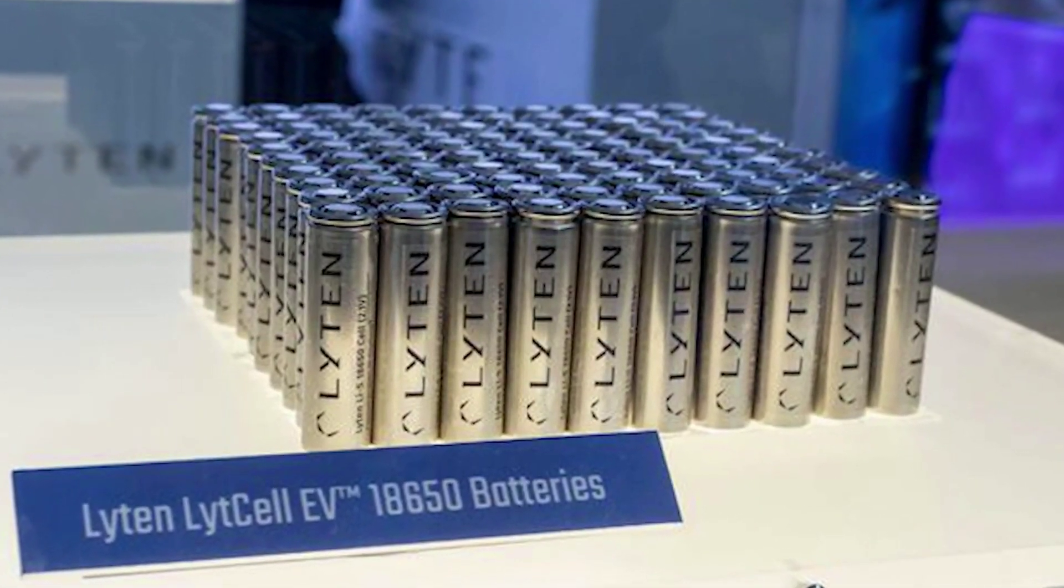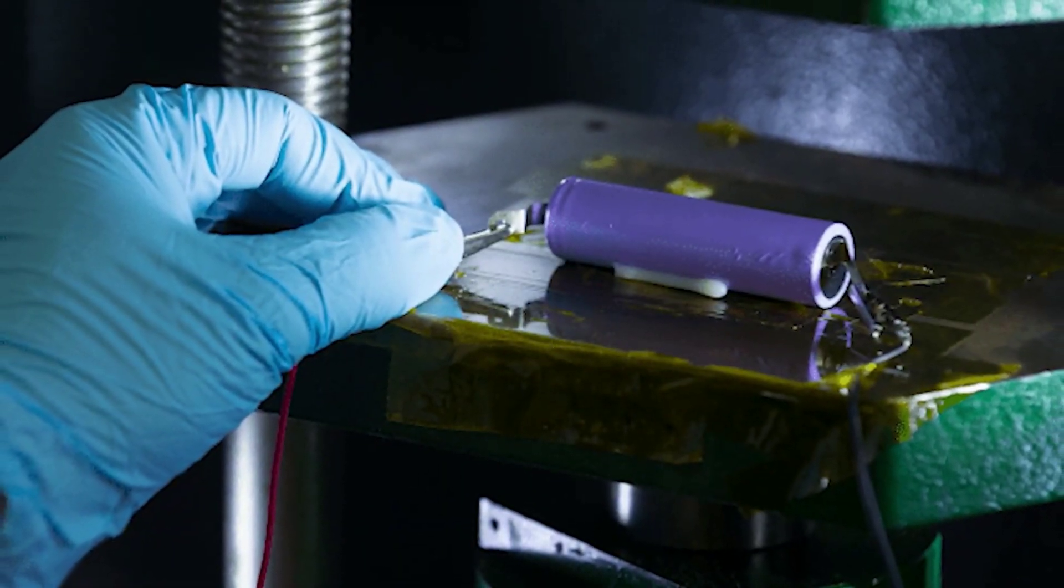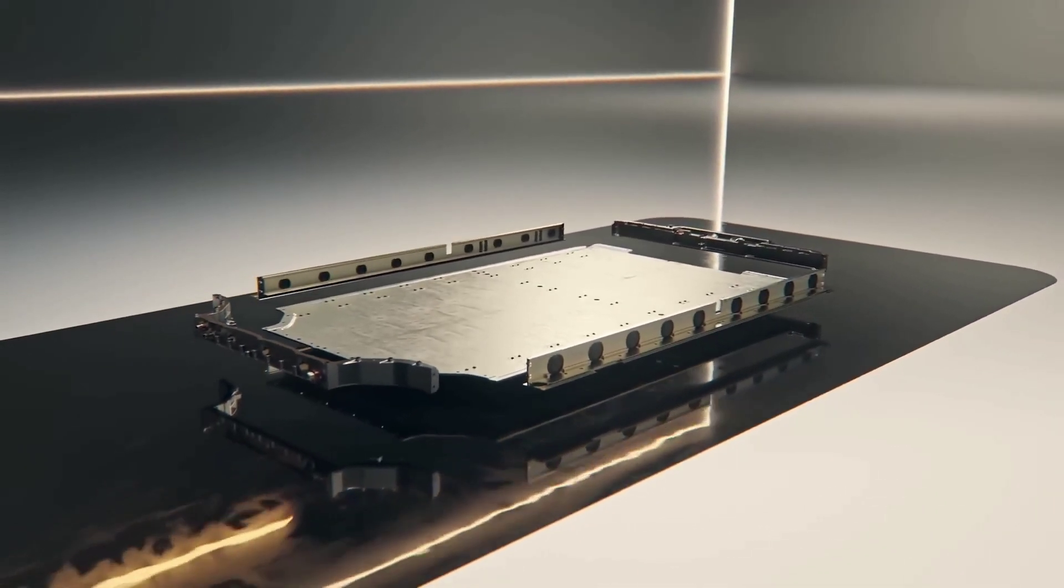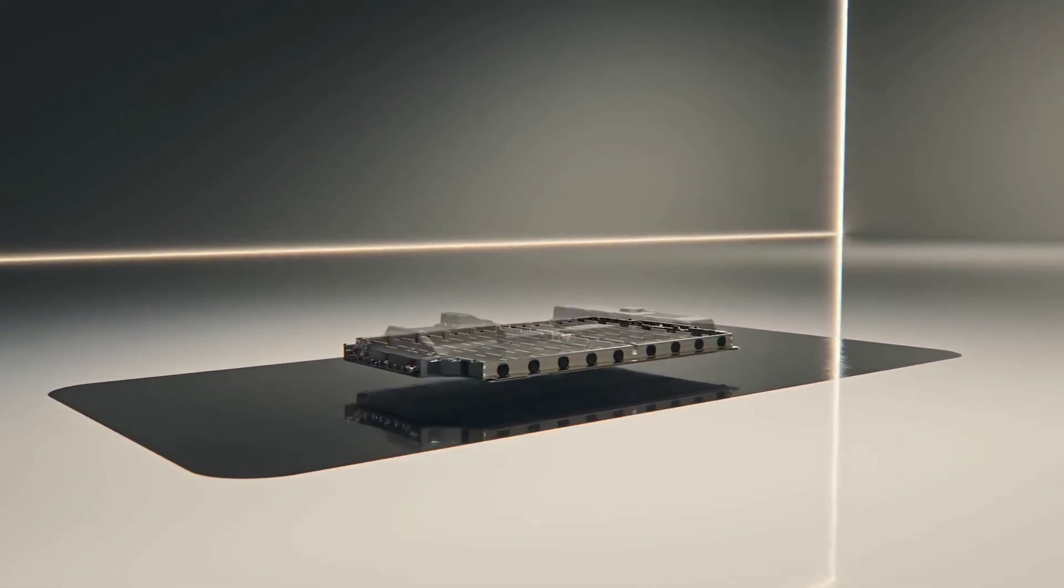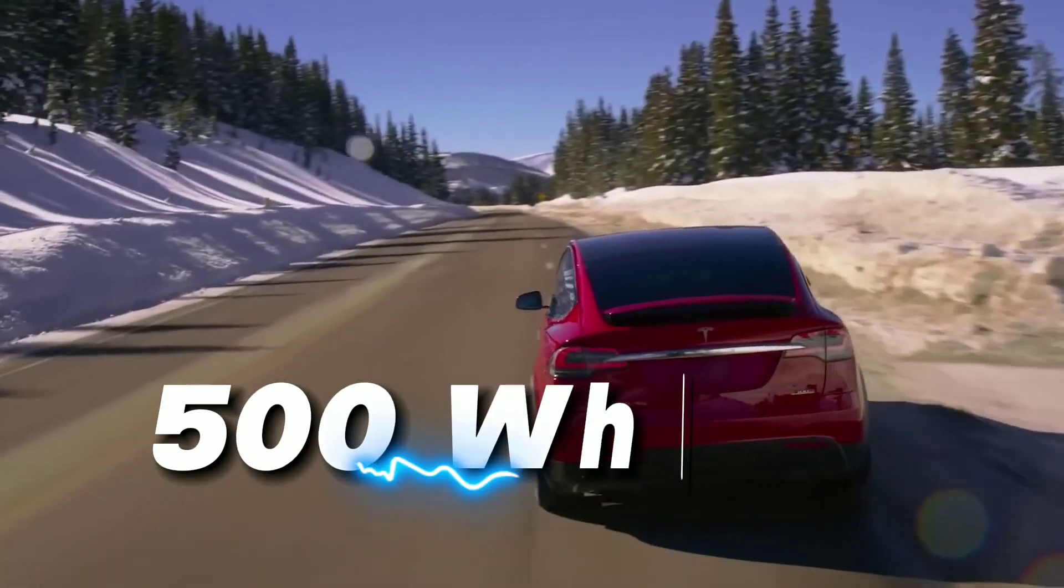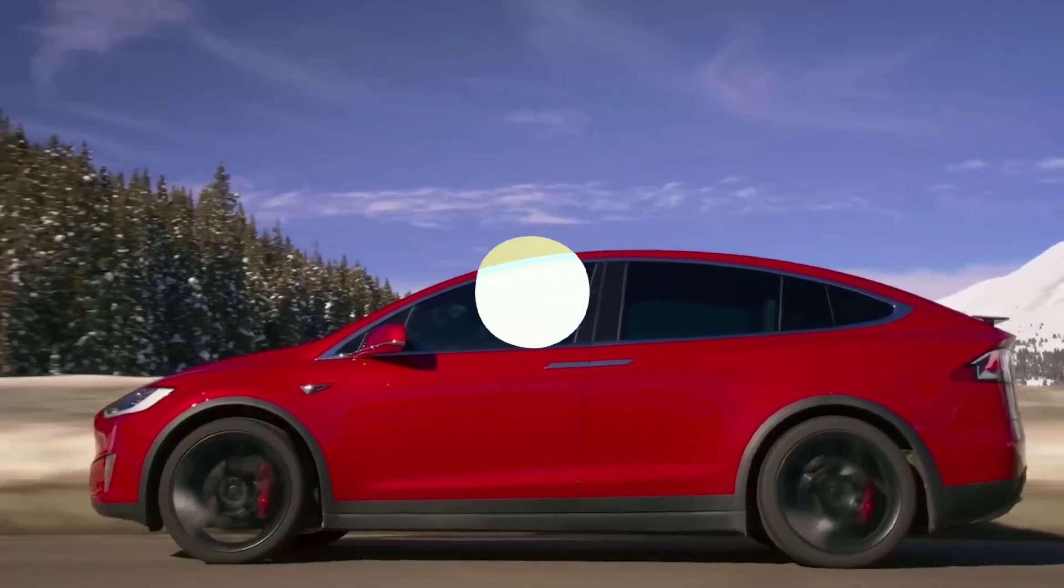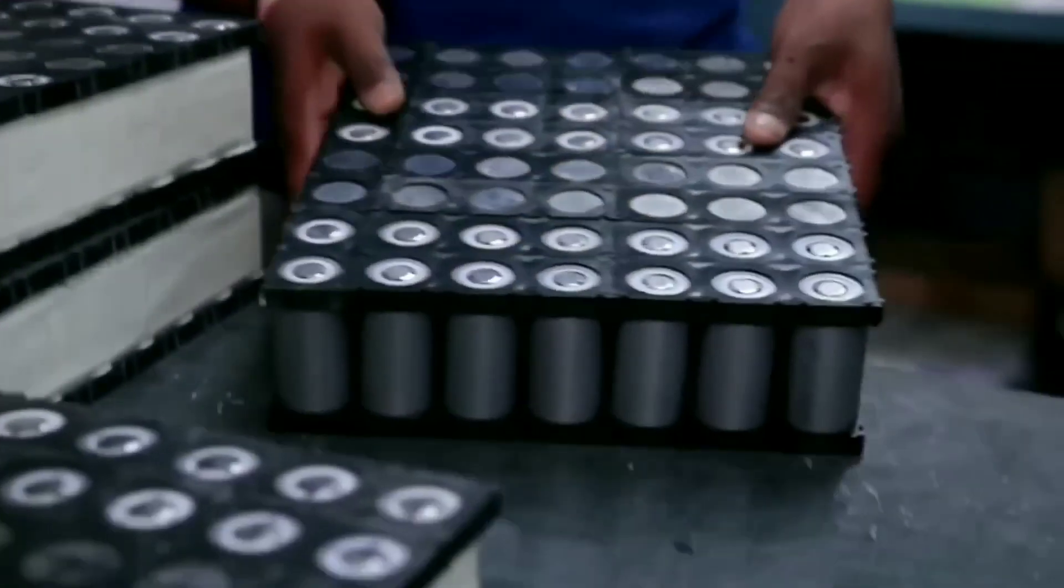By using 3D graphene as the core material for both the anode and the cathode of lithium-sulfur batteries, Leighton has achieved unprecedented results that could revolutionize the EV industry. Leighton claims that its lithium-sulfur battery has an energy density of more than 500 watt-hour per kilogram, which is twice as high as the best lithium-ion batteries available today. This means that Leighton's battery can double the range of EVs or halve their weight with the same range.